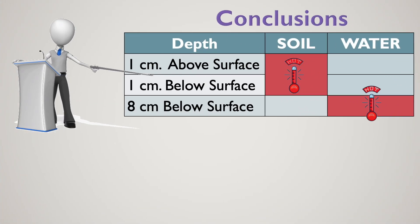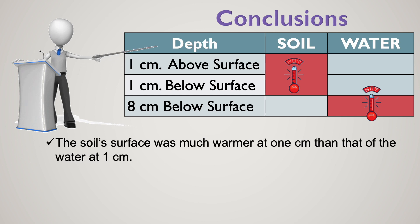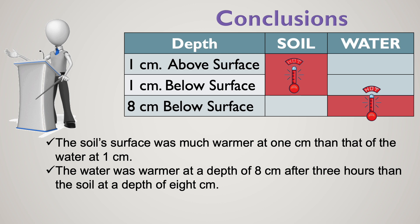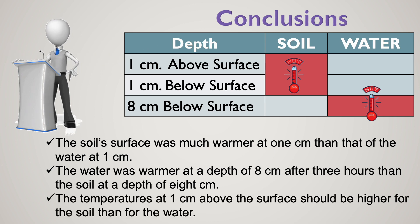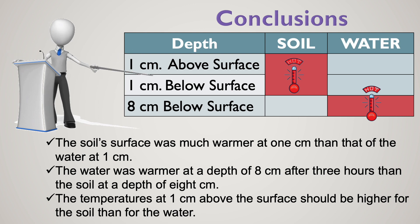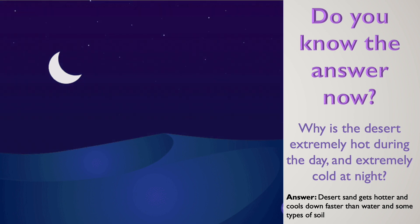If done correctly, students should conclude that the soil surface was much warmer at one centimeter than that of the water at the same depth; that the water was warmer at a depth of eight centimeters after three hours than the soil at the same depth; and that the temperatures at one centimeter above the surface should be higher for soil than for water.